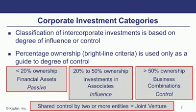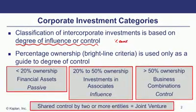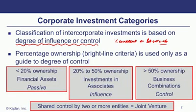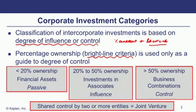The classification of intercorporate investments is based on degree of influence or control. Under US GAAP, percentage of ownership used to be referred to as bright line criteria. Post-accounting scandals such as Enron, bright line criteria are now an indication but not the outright rule. We're really looking for any instances where we have control or influence, regardless of the number of shares held.